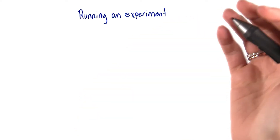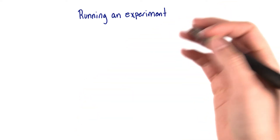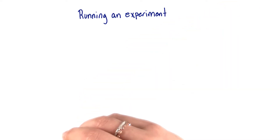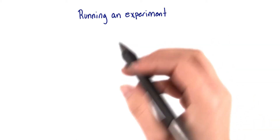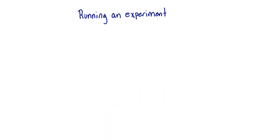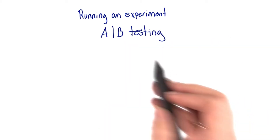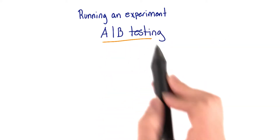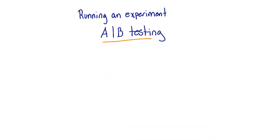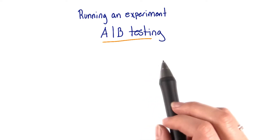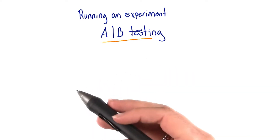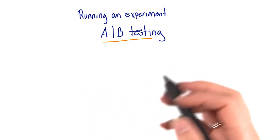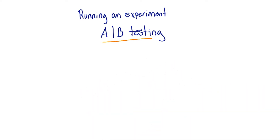Now that you know what you're expecting to change through your hypothesis and what you're going to do, you need to run an experiment. You can do this using an A-B test, which will help you compare two different versions of your web page or app and learn which one performs better.